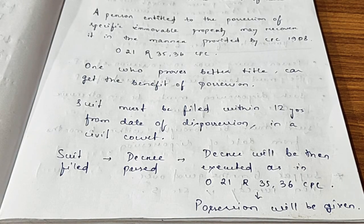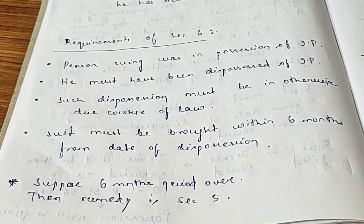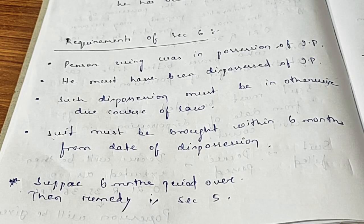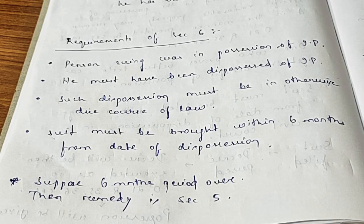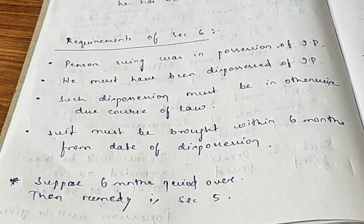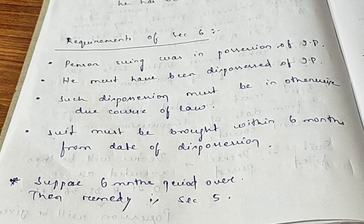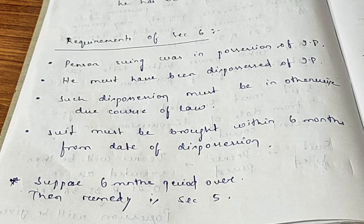Now let's see Section 6. First, let's see the requirements. Section 6 deals with a suit by a person dispossessed of immovable property. Section 5 was talking about title; Section 6 talks about possession. The ingredients are: the person suing was in possession of the immovable property; he must have been dispossessed of the immovable property; and such dispossession must be otherwise than in due course of law — meaning he must have been dispossessed by using force, by throwing someone out, or by cutting the electricity, and so on.